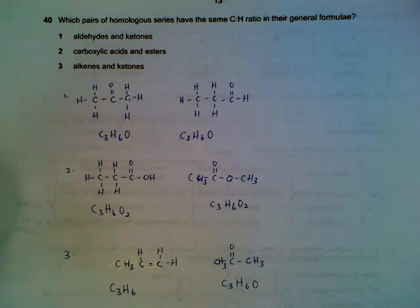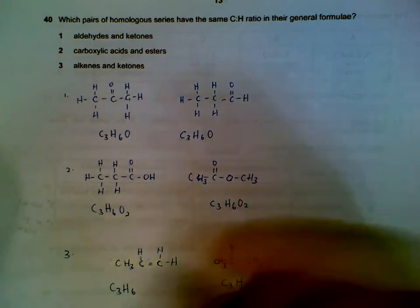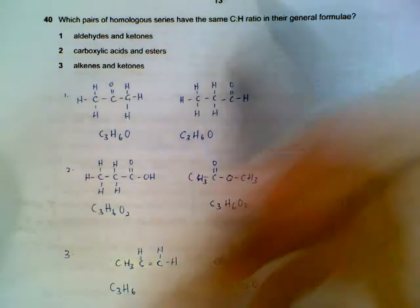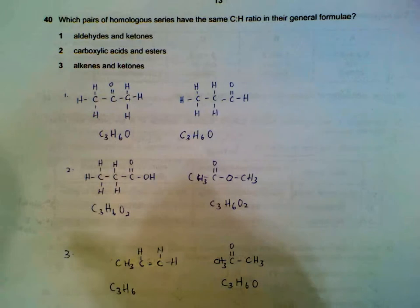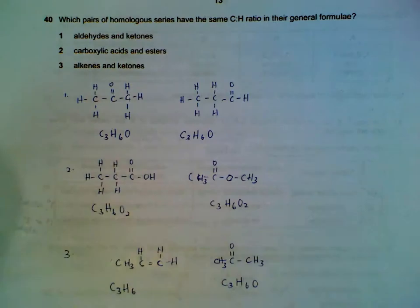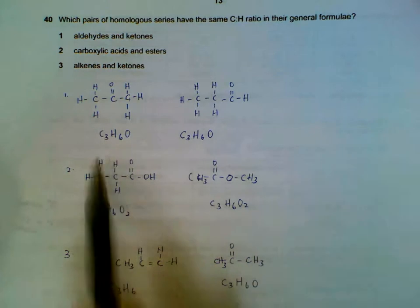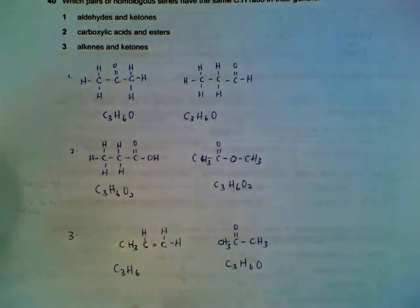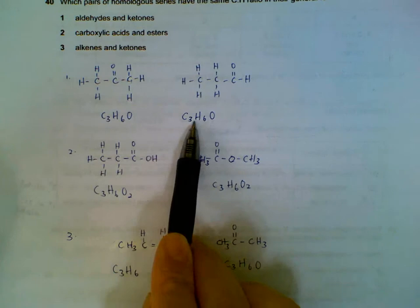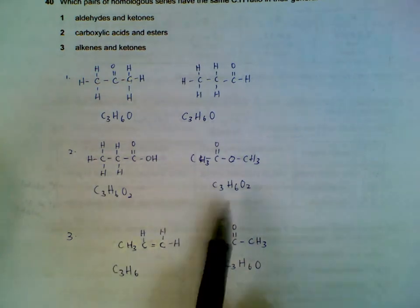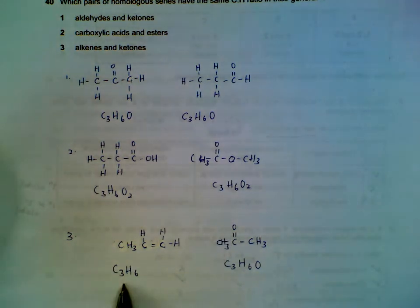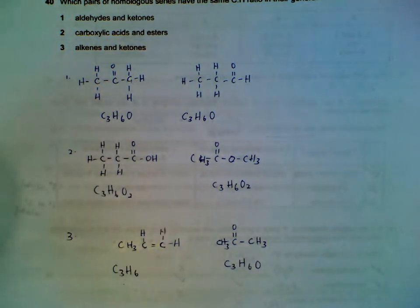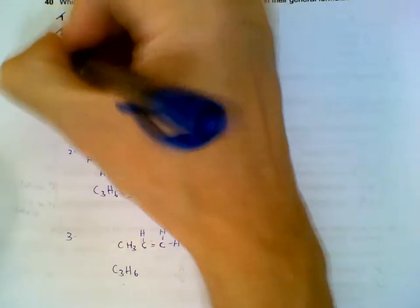Question 40: which pairs of homologous series have the same CH ratio in their general formula? You can use general formulae like CnH(2n+2), or use specific examples with 3 carbons to compare ratios. Aldehydes and ketones share the same CH ratio. Acids and esters share the same CH ratio. Alkenes and ketones also share the same CH ratio. All three pairs contain the same CH ratio.